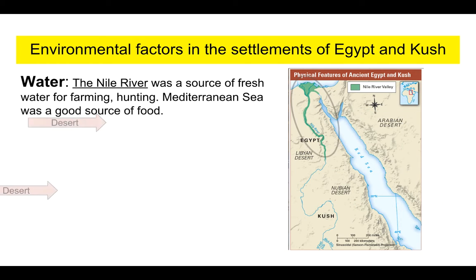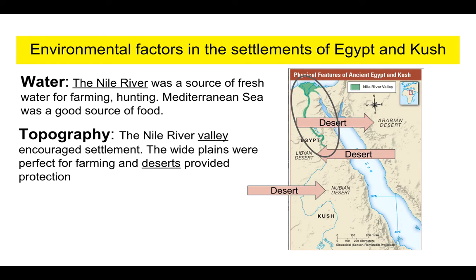Next we have topography. The Nile River Valley really encouraged settlement — those flat plains along the river are perfect for farming. And of course, we have the deserts here that provide natural barriers and protection from other areas.